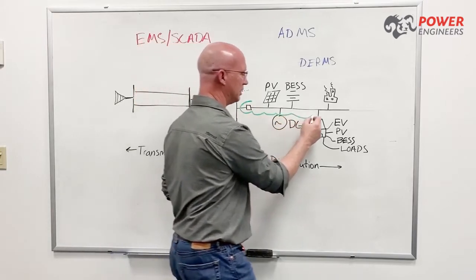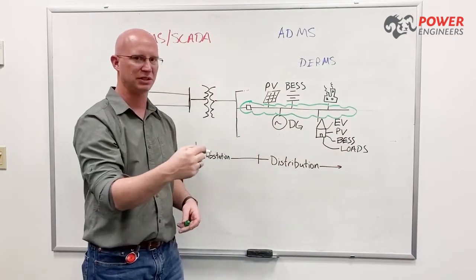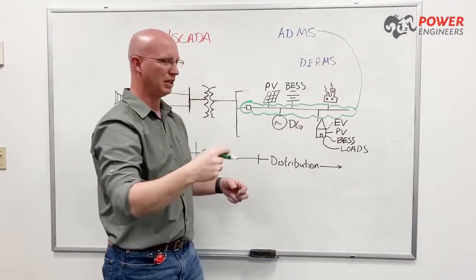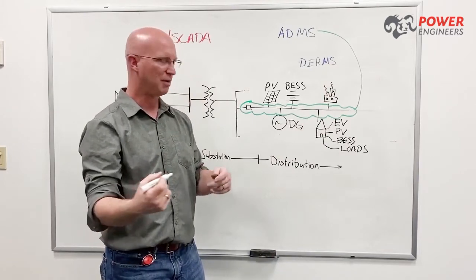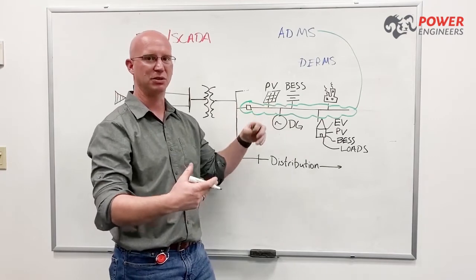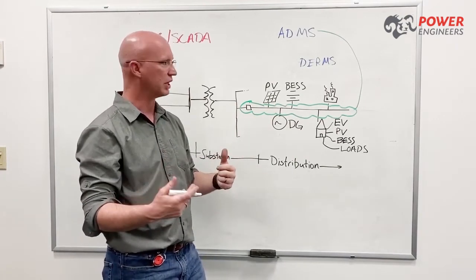ADMS is an advanced distribution management system that manages a utility's distribution system. There's some advanced capabilities there like automated switching and even some underlying modeling, electrical modeling to do load flow analysis in advance of that automated switching to make sure it's going to work out okay.